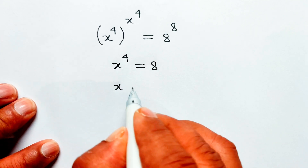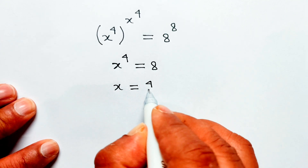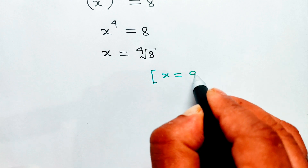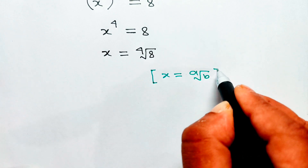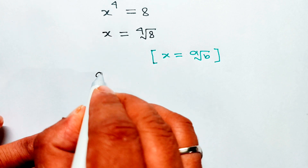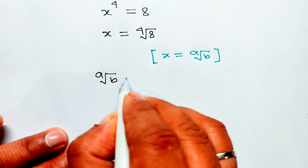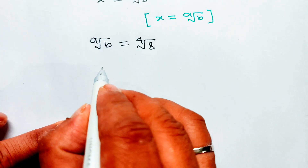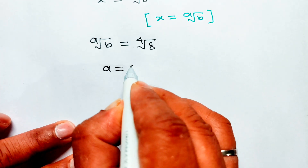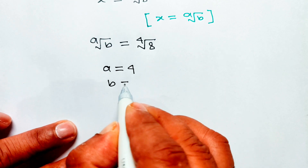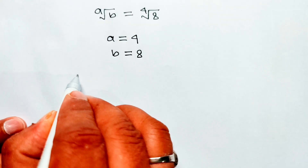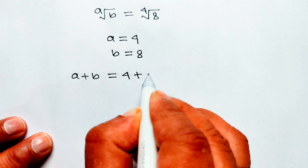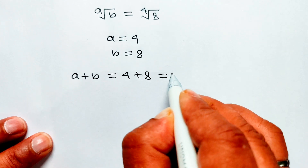Then x equal the 4th root of 8. Since x equal a root of b, we get a root of b equal 4th root of 8. Therefore a equal 4 and b equal 8. Then a plus b equal 4 plus 8 equal 12.